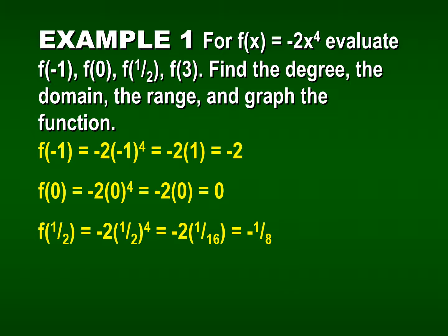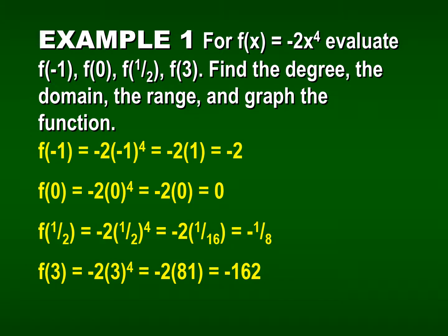Then f of one-half: one-half to the fourth power is 1 over 16, and negative 2 times 1 over 16 is negative 2 over 16, which reduces to negative 1 over 8. The last evaluation is f of 3: 3 to the fourth power is 81, and negative 2 times 81 becomes negative 162.